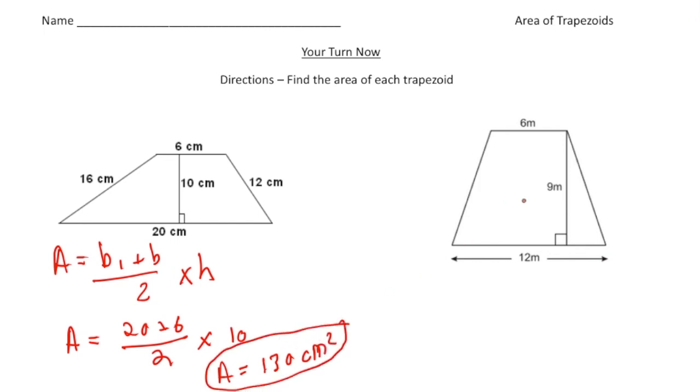The next one, we have a different looking type of trapezoid, but still, it's the same formula. So again, area equals the average of the bases B1 plus B2 divided by two times the height. So here we go. It's going to be B1, we're going to say is six. So it's going to be six plus base two is 12. We're going to divide that by two. Then we're going to times it by the height, which is nine.